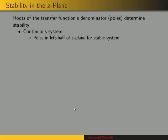So again, stability in the z-plane. We want to look at the definition of z and how that affects the stability criterion. For a continuous system, remember poles in the left half of the s-plane meant the system was stable if all the poles were in the left half of the s-plane.